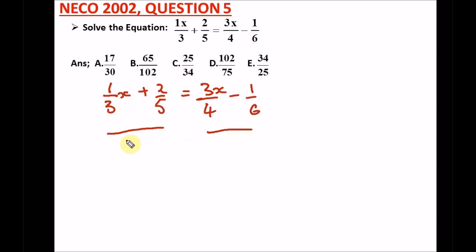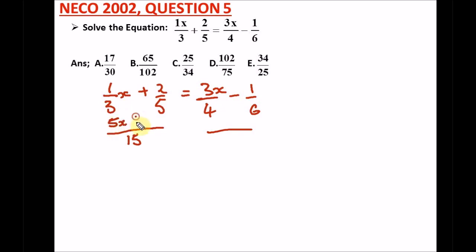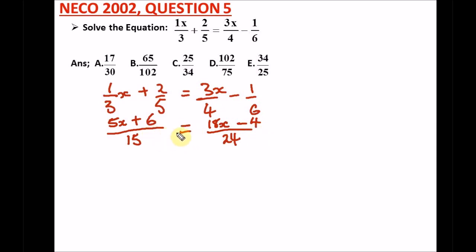The LCM of three and five is fifteen. Three into fifteen is five, and five times x gives us 5x. Five into fifteen is three, and three times two gives us six. For the right side, the LCM of four and six is twenty-four. Four into twenty-four is six, and six times 3x gives us 18x. Six into twenty-four is four, and four times one is four.